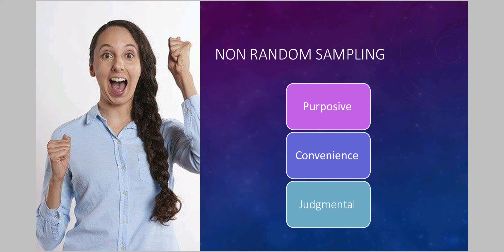Now, coming to non-random sampling, which is not based on any method or law. Here, samples are drawn simply on the basis of the value judgment of the investigator. It could be purposive — for example, if conducting a survey on eating habits of teenagers, the sample will obviously be teenagers. It could be based on convenience — for example, selecting teenagers from nearby areas. Or it can be judgmental, using one's own value judgment to draw the sample. This method is easier than random sampling, but there is a high chance of bias since it is based on value judgment and not on any rule, law, or theory.